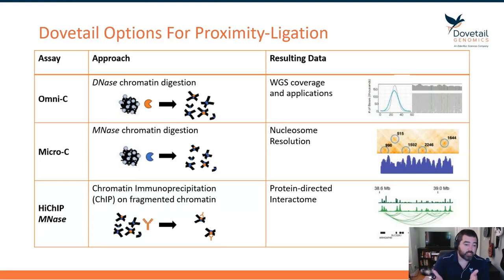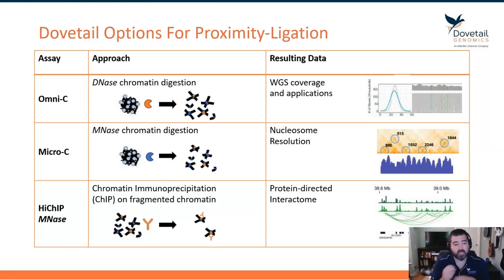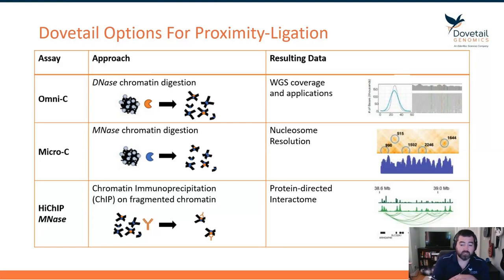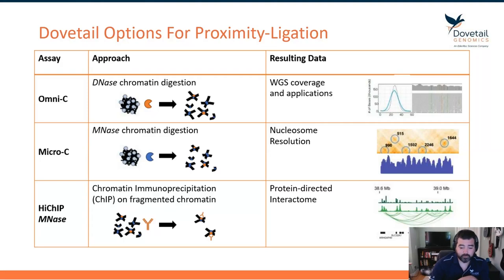With Omni-C, we're asking the viewpoint of the interactome from a single base pair, which is more informative for primary sequence. Micro-C is more informative over actual chromatin building blocks. And finally, we have Hi-CHIP, which enables us to really identify which enhancers are engaged with what promoters, where we fragment with MNase and then perform chromatin immunoprecipitation with an antibody of choice for that protein-directed view of the interactome.